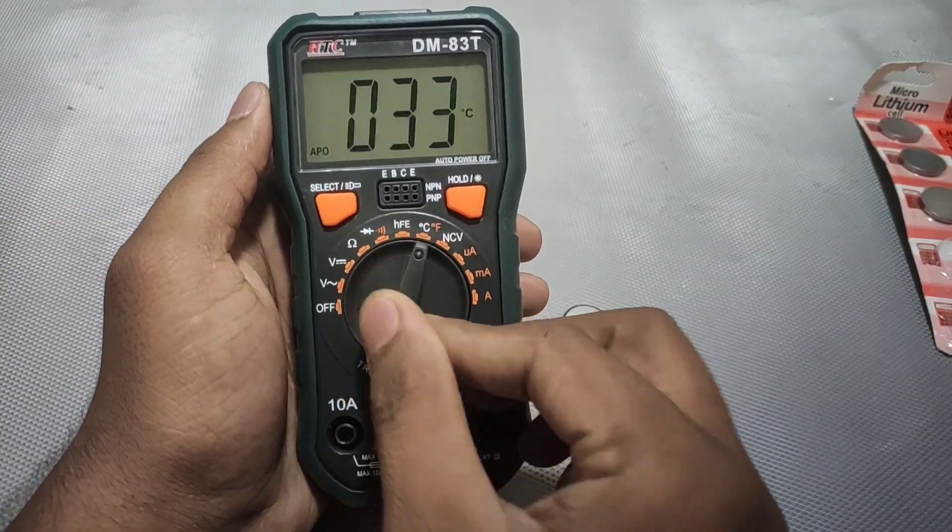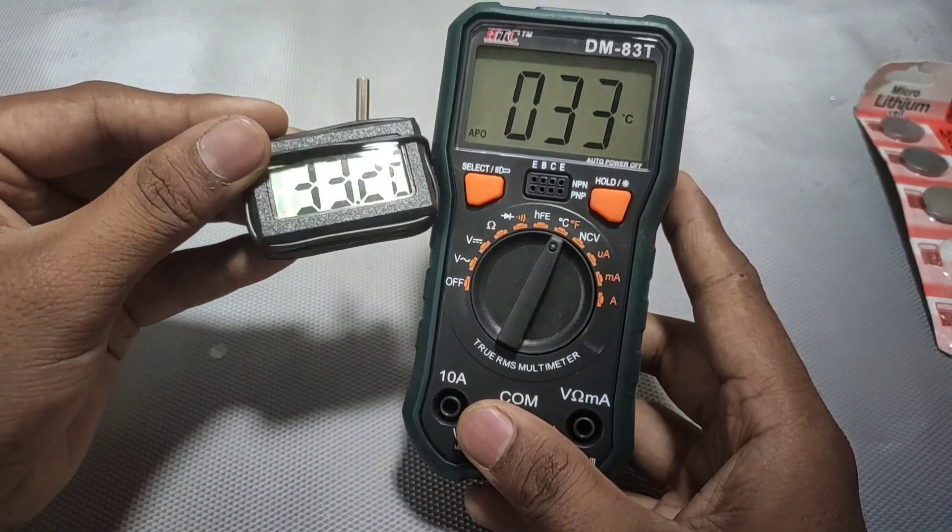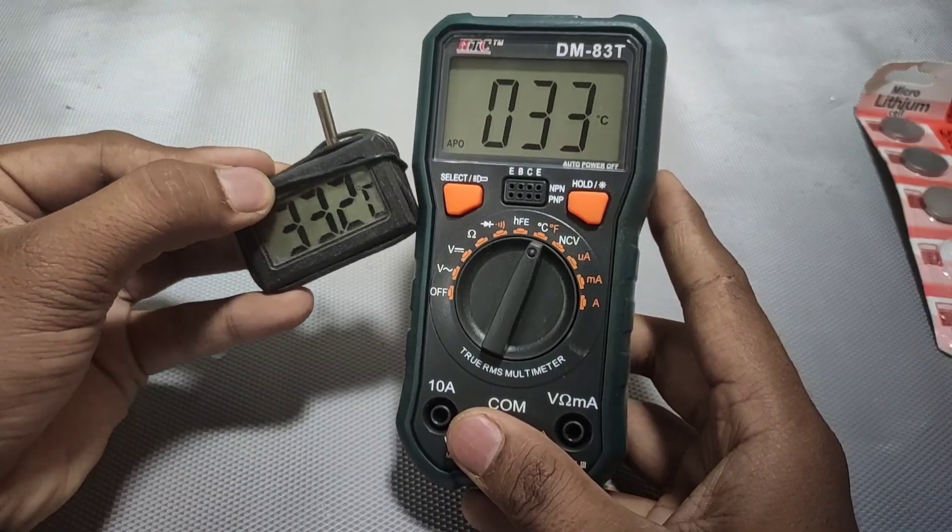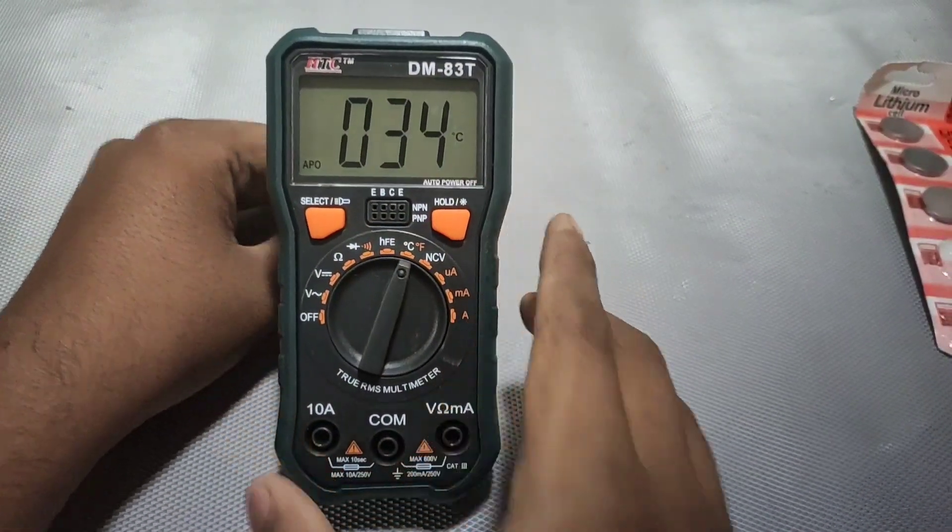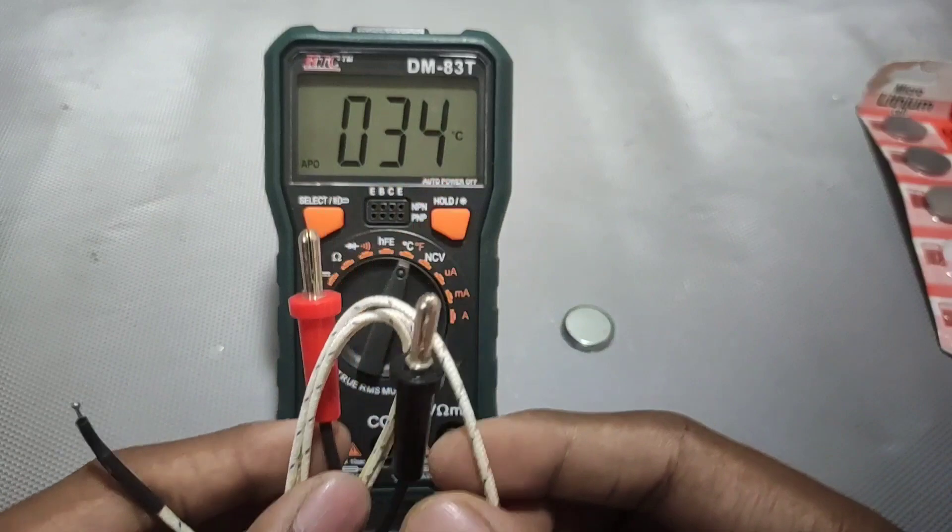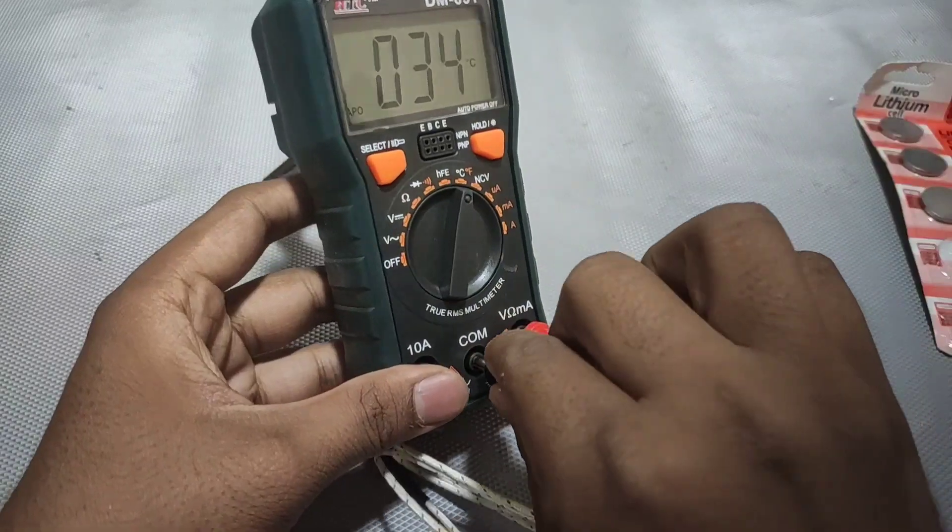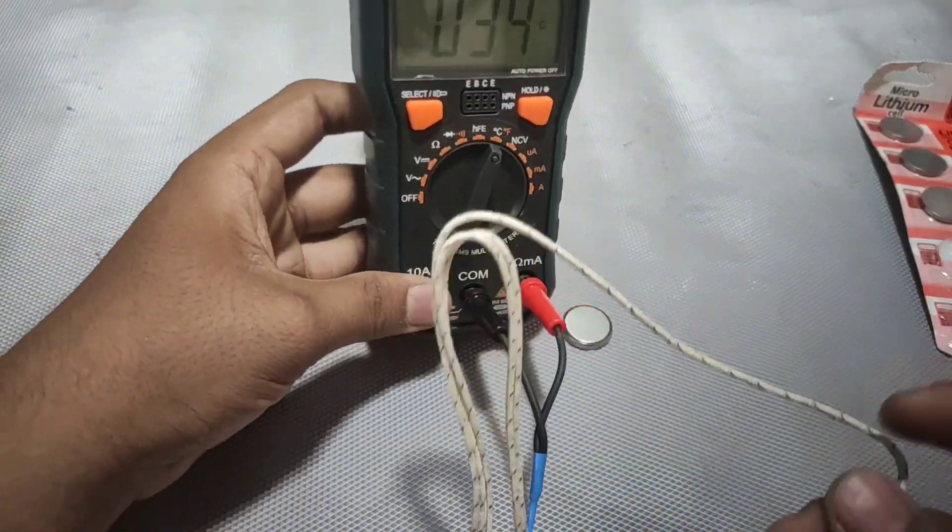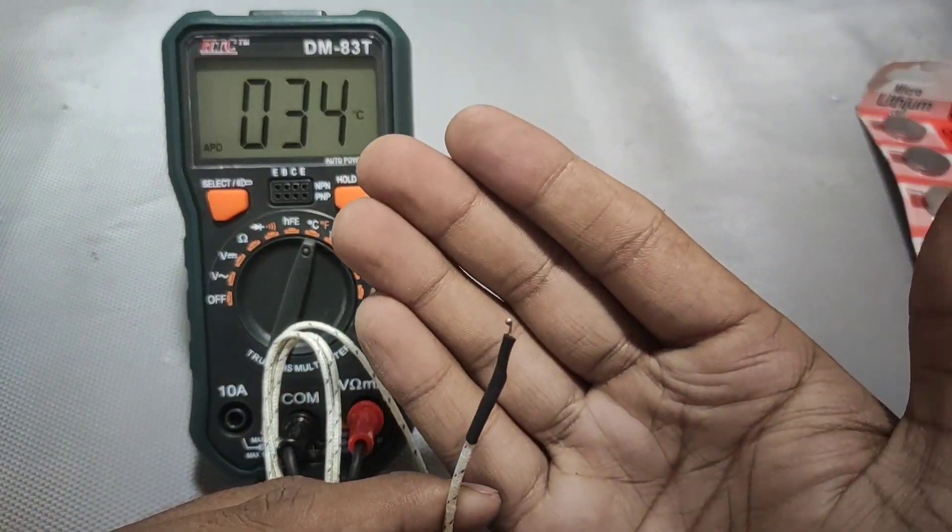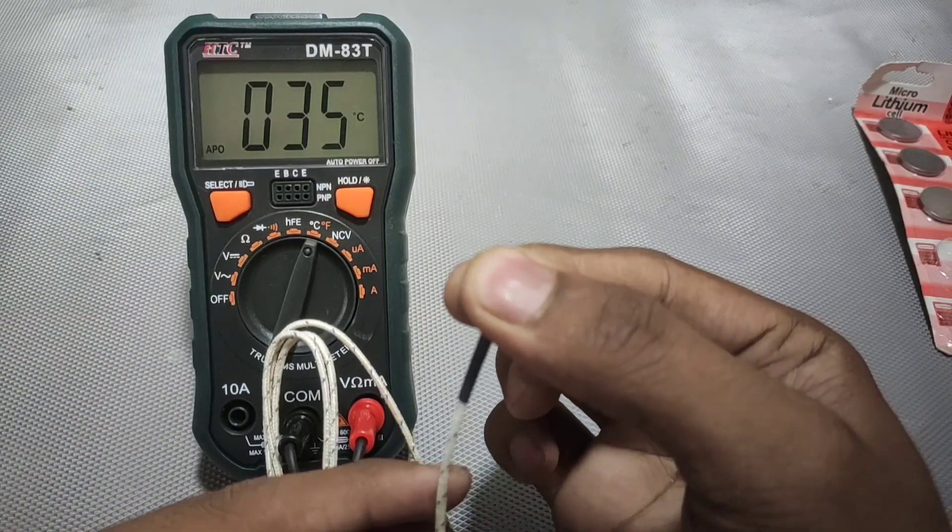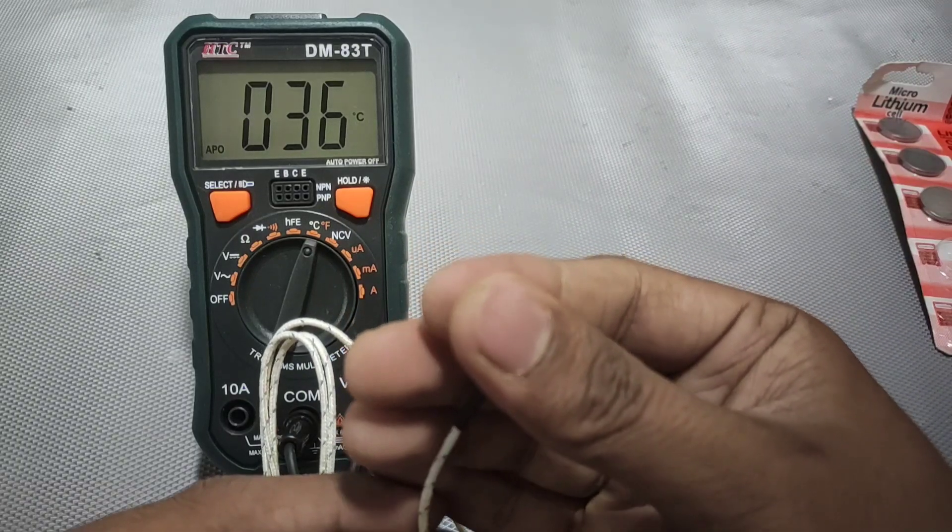Now let's see the temperature readings. You can see 33 and 34 degrees Celsius which is actually my room temperature. As I haven't used any probe here, it will show default temperature of my room. So let's just insert the temperature probe to measure the reading. I will keep the sensor in my fingers so it will measure my body temperature. You can see it's slowly rising and it reaches to 37 degrees Celsius.